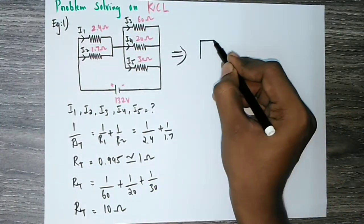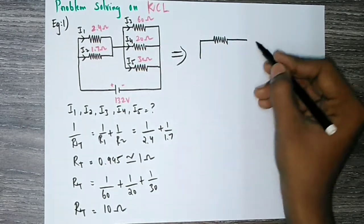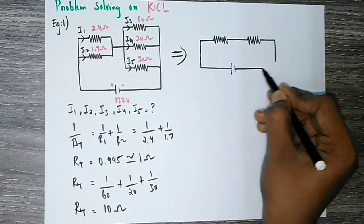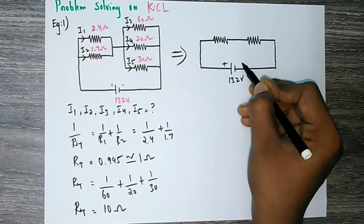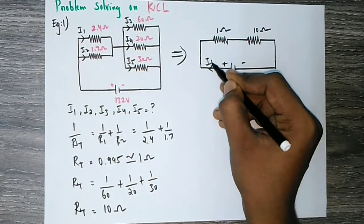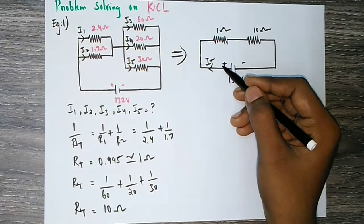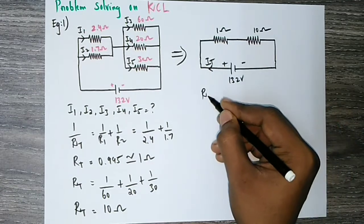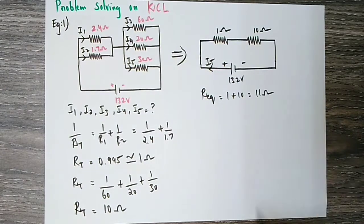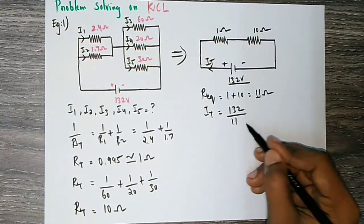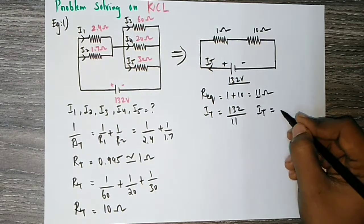There is one resistor of 1 ohm and one resistor of 10 ohm. The power supply is 132 volts. We add these two resistors in series giving a total resistance of 11 ohms. Total current I equals V over R, so 132 divided by 11 equals 12 amps. Total current is 12 amps.